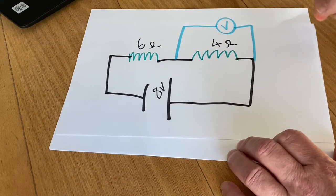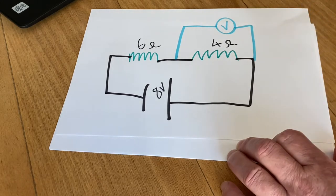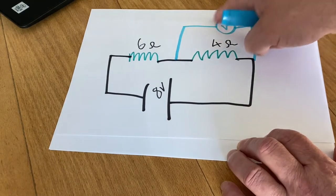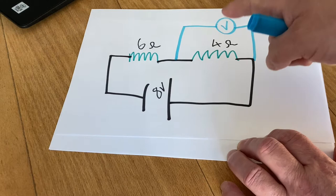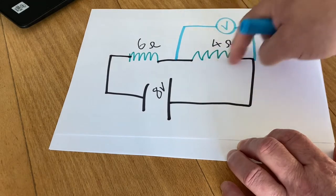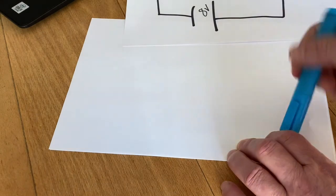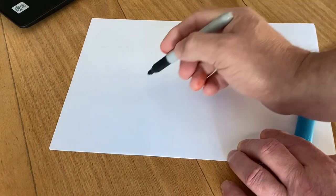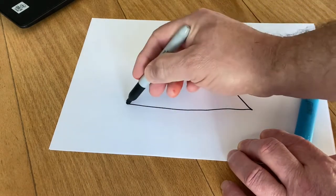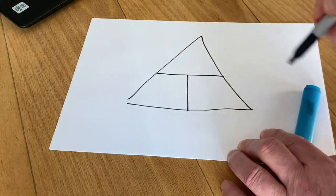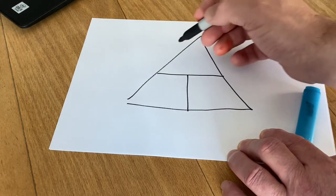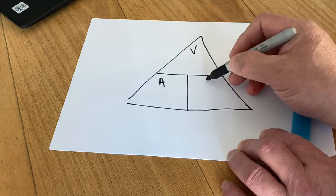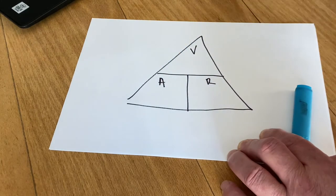We need to do an Ohm's law calculation and essentially we're just focusing on this part of the circuit. So we need to put into our triangle whatever information we've got here. So let's draw the triangle. And just in case you can't remember, it's volts, amps and resistance in here.